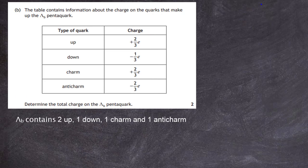Question 7b: the table contains information about the charge on the quarks that make up the lambda b pentaquark. We have the type of quark — up, down, charm, and anti-charm — and on the right-hand column we have the charge in terms of fractions of the electronic charge e. We must determine the total charge on the lambda b pentaquark. It contains two up, one down, one charm, and one anti-charm, so we fill them in and add them up.